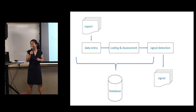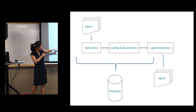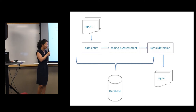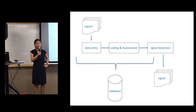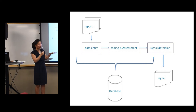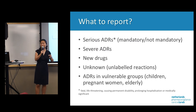In order to perform signal detection you have to do coding and assessment. The importance of coding is sometimes underestimated, but it is very important how you code your report because this determines how you can retrieve your data later — and that determines how well you can do your signal detection. All these reports go into your database and then you can perform signal detection. In smaller centers this is done case by case; larger organizations like the UMC use statistics to make a selection and then look back at the case series.